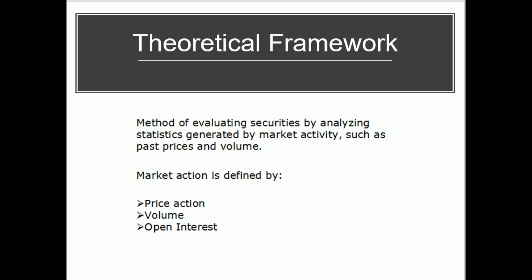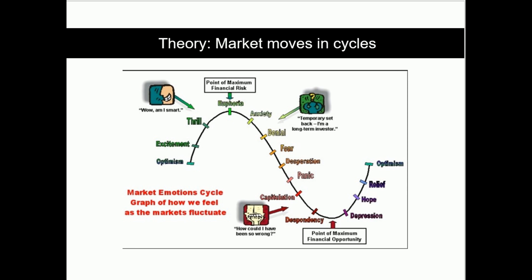The theory that markets move in cycles is illustrated here. When the market is in an upward bullish trend, people become very optimistic and excited because they've made gains — perhaps buying lower and now earning 10 to 20 percent. They tell themselves how smart they are, and it reaches a point where they become euphoric, posting on social media, sometimes even writing books about it.